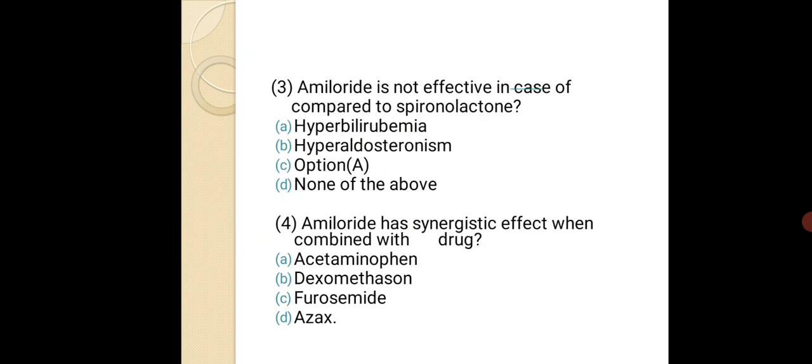MCQ 3: Amiloride is not effective compared to spironolactone in cases of which condition? Options: A. Hyperbilirubinemia, B. Hyperaldosteronism, C. None of the above. The correct answer is B — hyperaldosteronism. MCQ 4: Amiloride has a synergistic effect when combined with which drug? Options: A. Acetaminophen, B. Dexamethasone, C. Furosemide, D. Azax. The correct answer is dexamethasone.